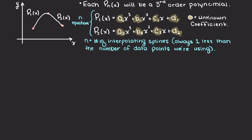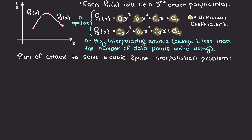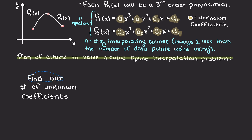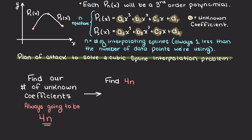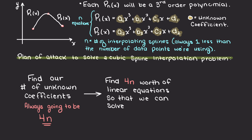The first thing we need to do is determine how many unknowns we actually need to solve for. The number of unknowns depends on the number of cubic splines that we are interpolating for. Therefore, we can say that for every spline n, we will have 4n unknowns, meaning that we need to find 4 equations per spline that we add.